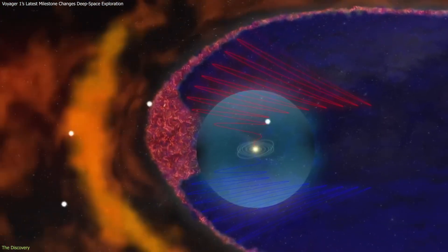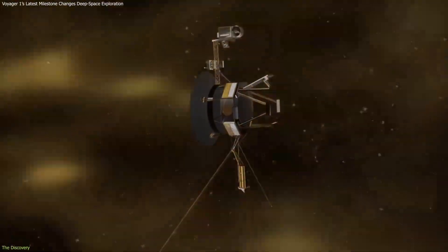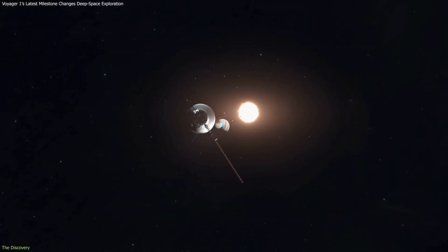Reaching one light day doesn't drastically change its environment, but it emphasizes its growing separation from the region shaped by the Sun's magnetic field. Despite its age, Voyager remains capable of collecting meaningful data.